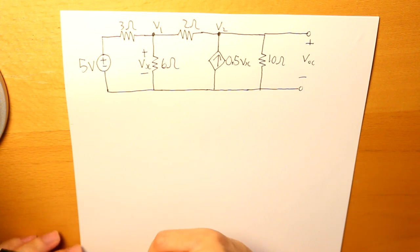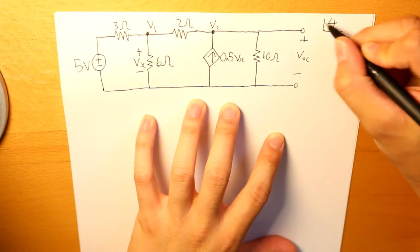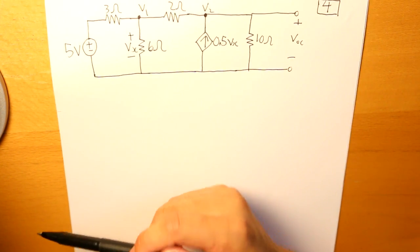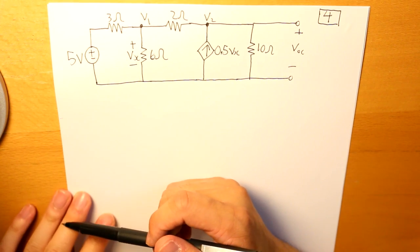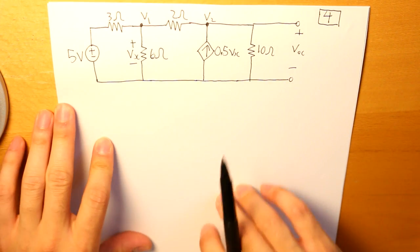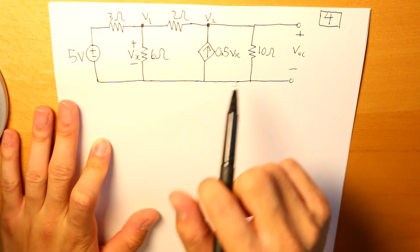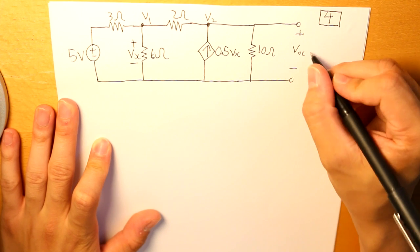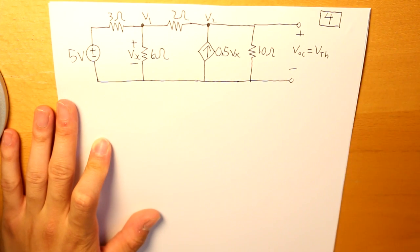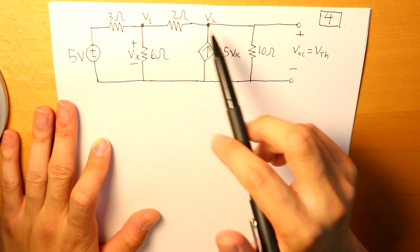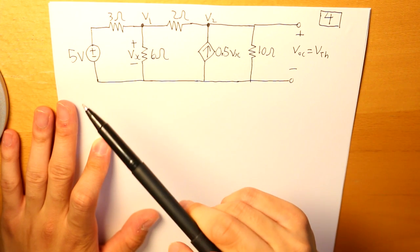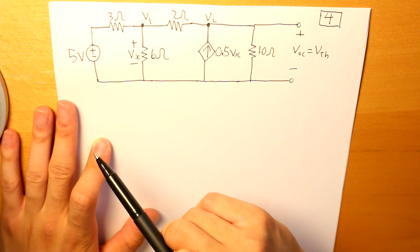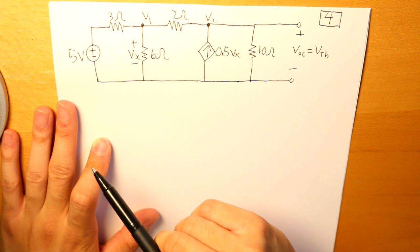Step 4: we're going to determine what Vth and Rth are. So this is our circuit. VOC is essentially what Vth is going to be. Then we have nodal analysis implemented in the circuit, because that is the method we need to find our Thevenin voltage and Thevenin resistance.